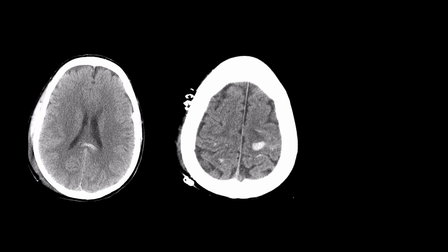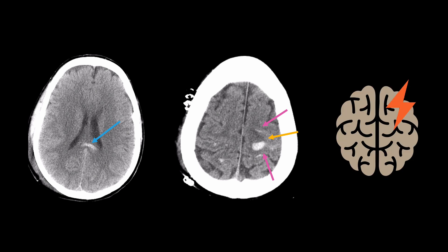CT imaging of this patient after a car accident revealed subarachnoid hemorrhage, but there was also a typical traumatic hemorrhage in the splenium of the corpus callosum and left frontal lobe, along with scattered subarachnoid hemorrhage seen in the cortical sulci. In a case like this, unless there is compelling clinical history to the contrary, the imaging is entirely consistent with subarachnoid hemorrhage secondary to trauma.